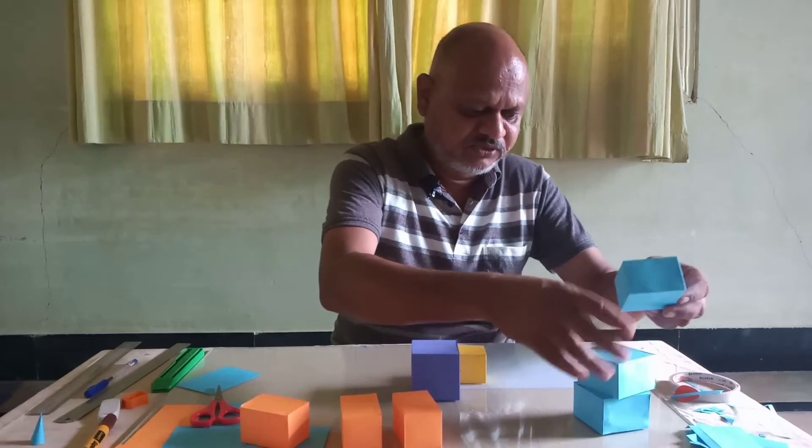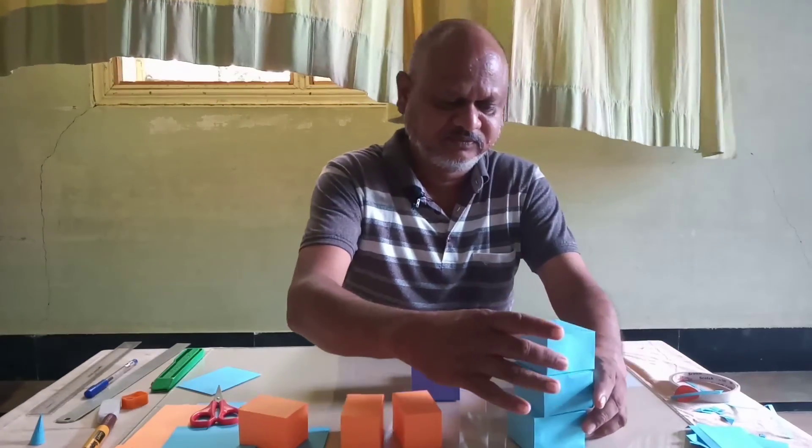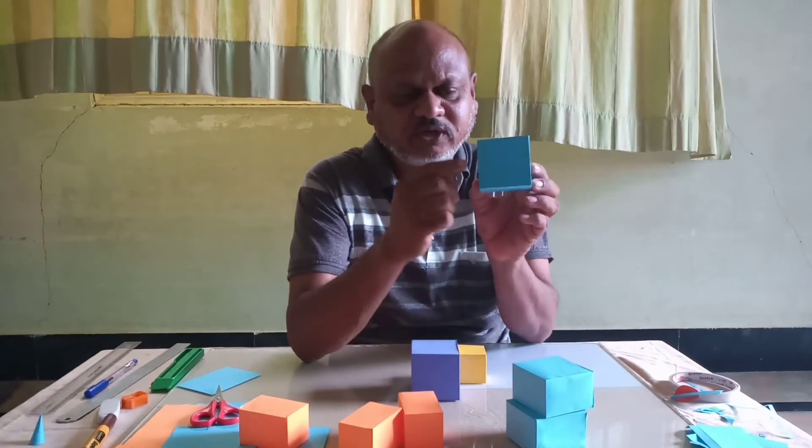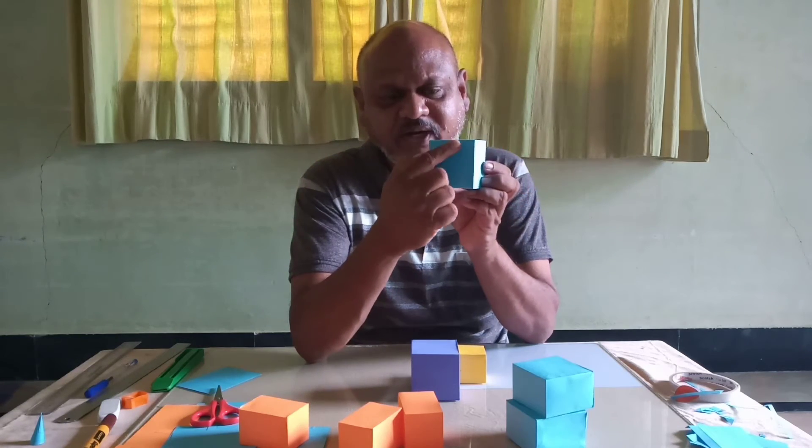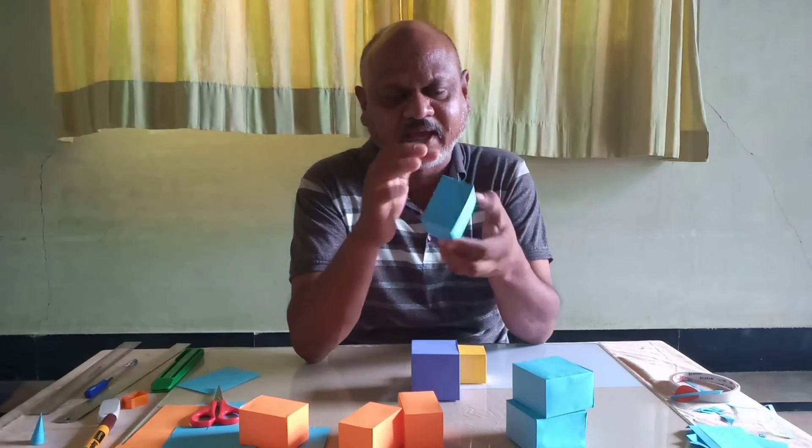Then I have three of these cuboids. So if you notice, this is B and this is B. So it's a B squared into height A.